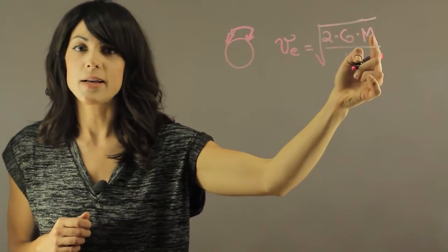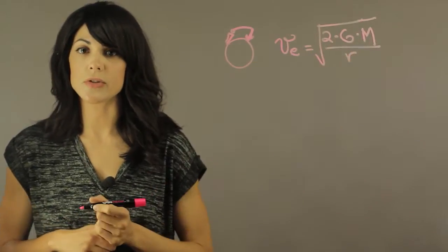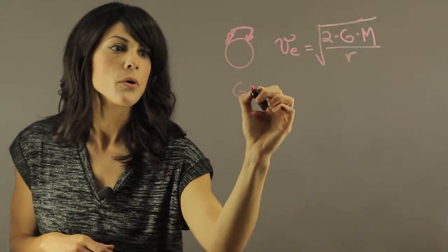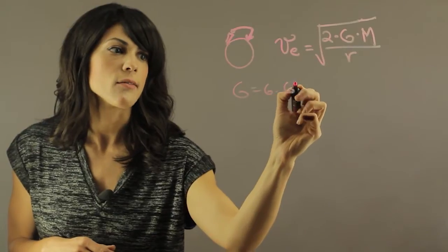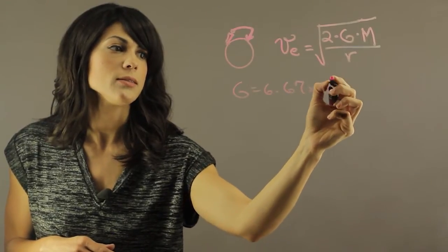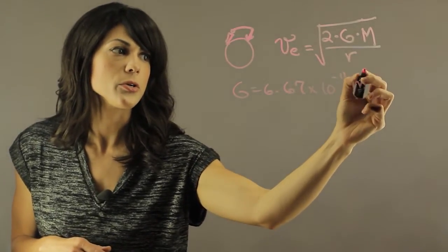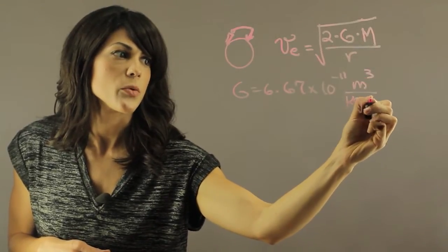This is the mass of the planet, this is the radius of the planet, and G is the gravitational constant, and it has a value of 6.67 times 10 to the minus 11 meters cubed per kilogram second squared.